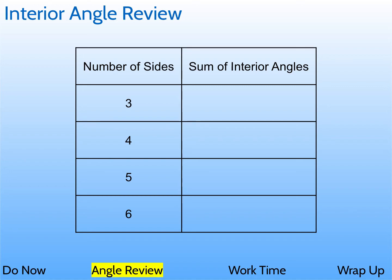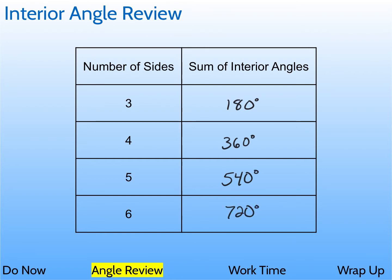Quick review. The sum of the interior angles of a polygon with three sides — that's a triangle of course — is 180 degrees, any triangle. Any quadrilateral with four sides, that's 360 degrees. Any pentagon with five sides, that's 540 degrees, and a hexagon is 720 degrees.